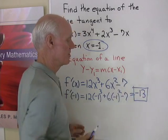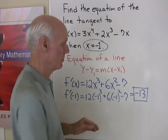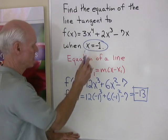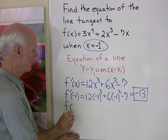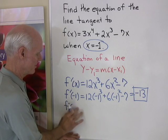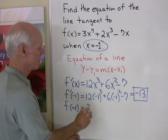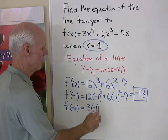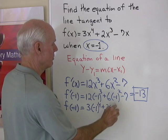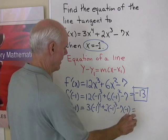Since that's the derivative, that is the slope of the line tangent to the graph when x is equal to negative 1. So I have M right there. Now let's go back to the function itself and find its value when x is equal to negative 1. So for the function itself, I have 3 times negative 1 to the 4th plus 2 times negative 1 cubed minus 7 times negative 1.